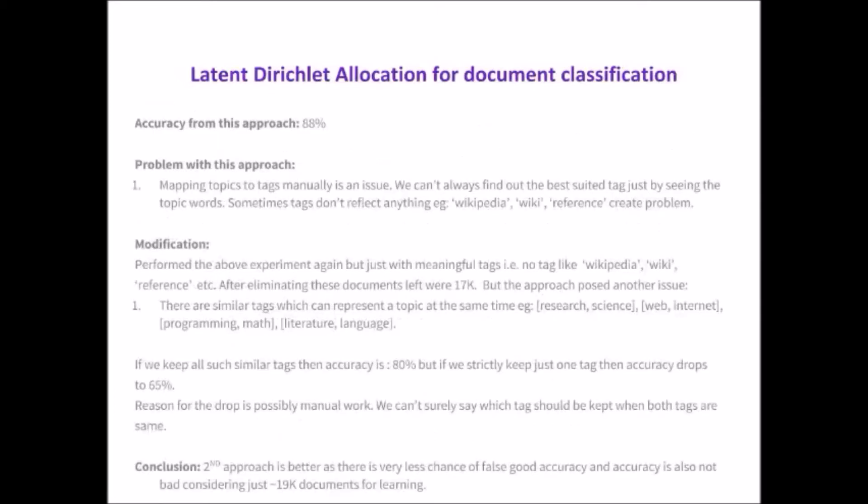Accuracy achieved was a bit less but not bad. There was an issue with this approach also. Tags like Wikipedia and Wiki are hard to link with topic words. So we modified our categories to keep only meaningful tags.